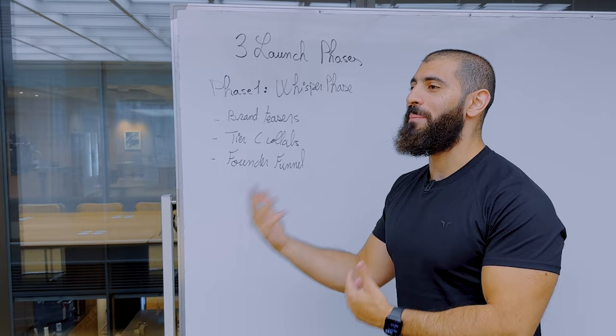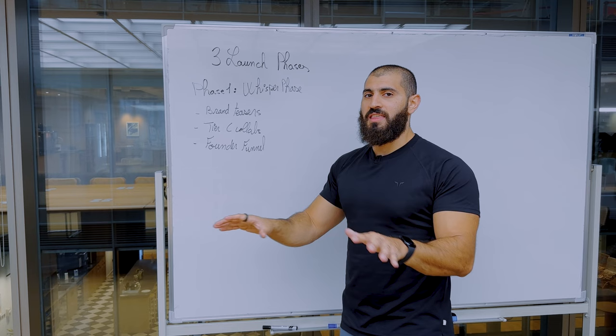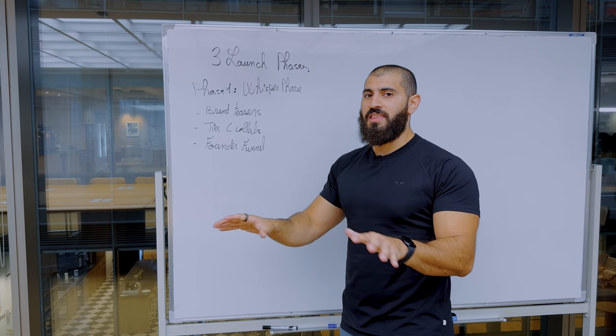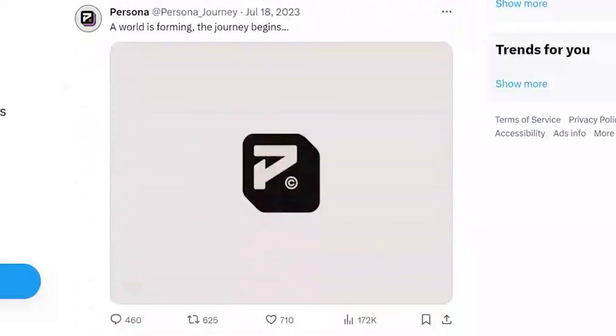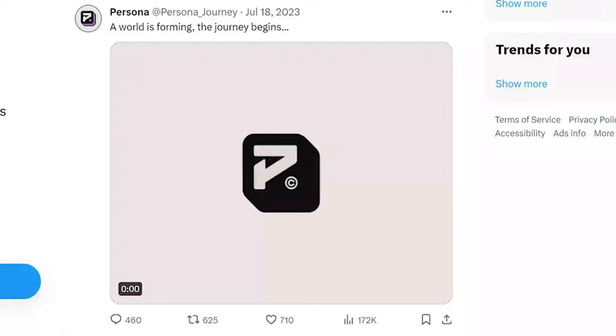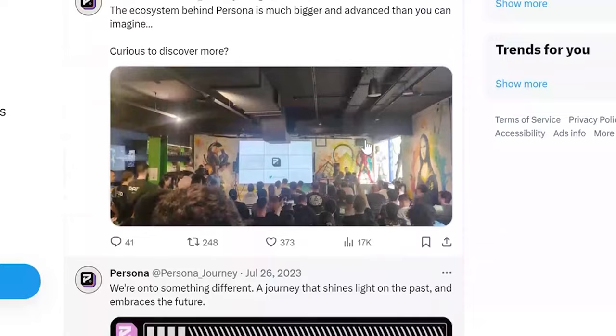At this stage, you should not be talking about utility, the team, or what your prospect is going to get. Instead, you are going to be pleasing people's imagination and their desire for a story using brand teasers and brand trailers. Looking at Persona, their very first tweet on July 18, 2023 was just a logo with a nice animation saying 'a world is forming, the journey begins' — very teaser-based, not a lot of big information.